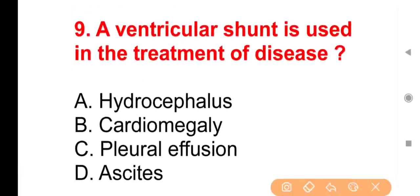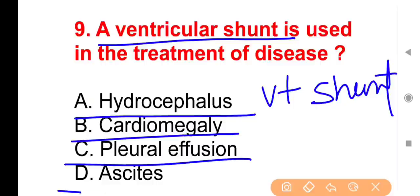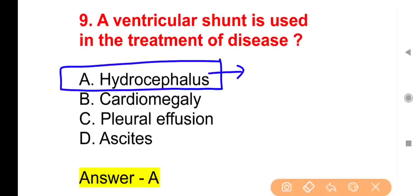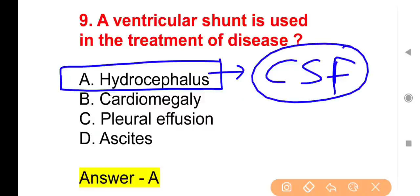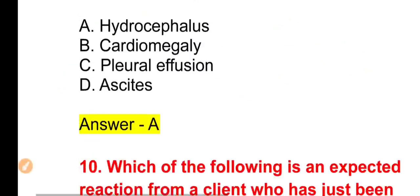Question 9: A Ventricular Shunt (VT Shunt) is used in the treatment of which disease? Options: Hydrocephalus, Cardiomegaly, Pleural Effusion, Ascites. The right answer is Option A — Hydrocephalus. In hydrocephalus, CSF level in the brain increases abnormally due to excessive production or impaired drainage. A tube (shunt) is inserted to drain the excess CSF — this is called a ventricular shunt.